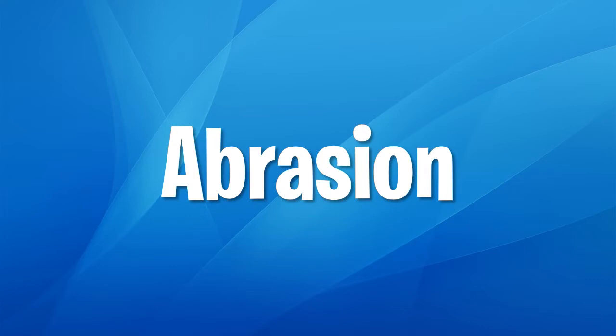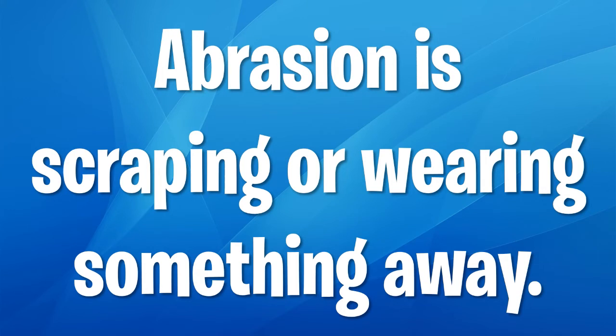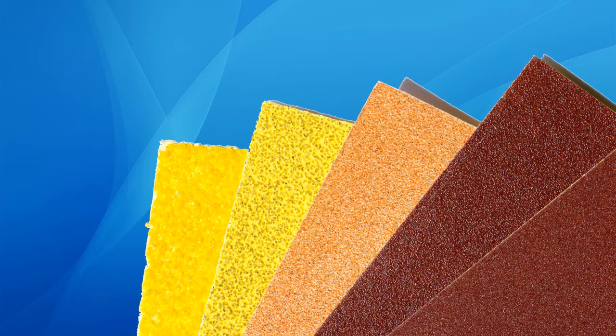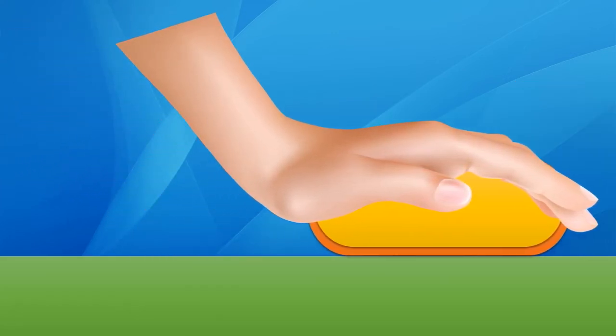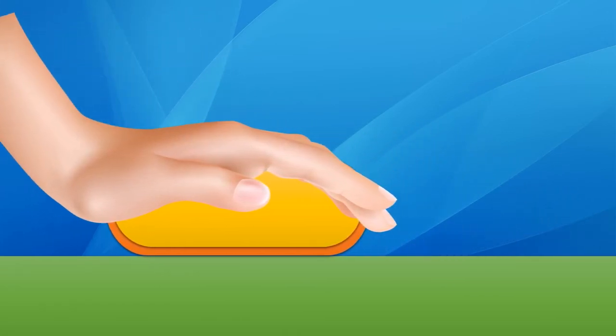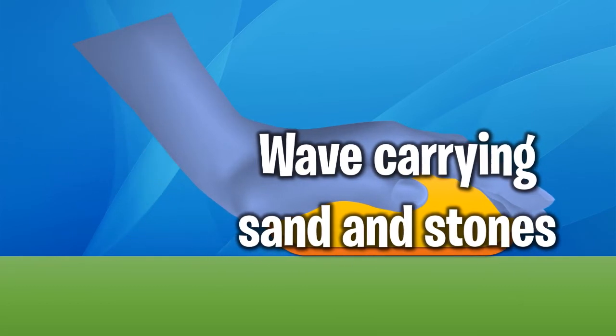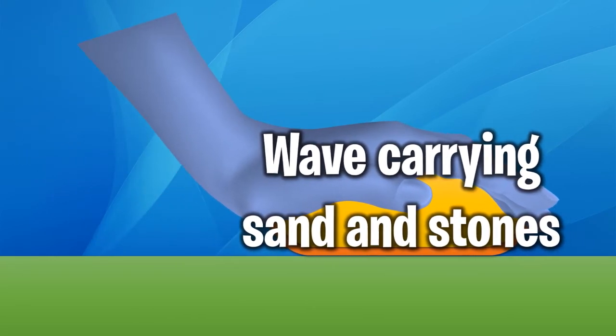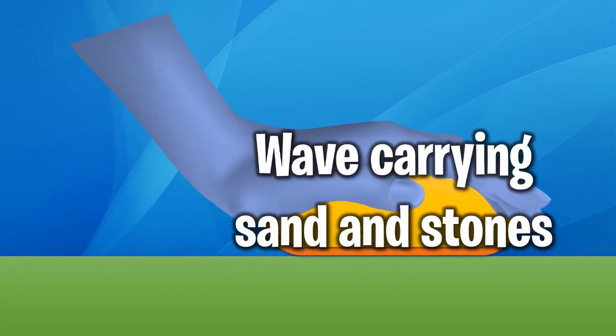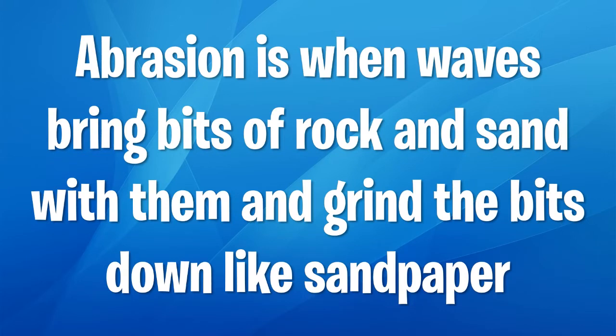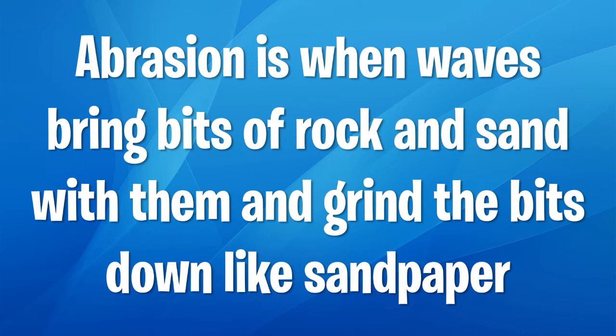The next process is abrasion — scraping or wearing something away. Think of falling off a skateboard and abrading your knee. Sandpaper is the most common example: if you take a sanding block and use a back-and-forth motion along a surface, you wear away that surface. If it's a wave carrying sand and stones — because sandpaper has sand in it — it works the same way. Abrasion is when waves bring bits of rock and sand with them and grind the surface down like sandpaper.